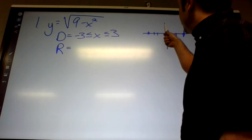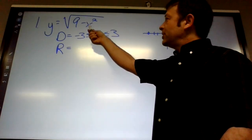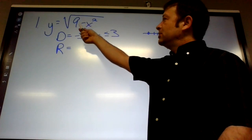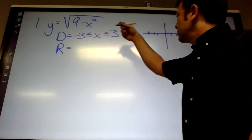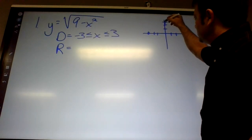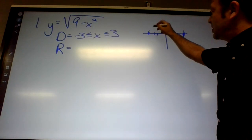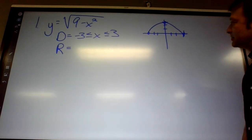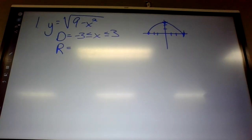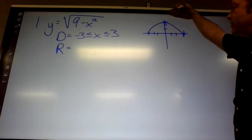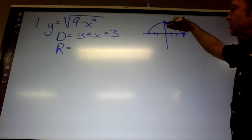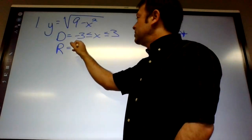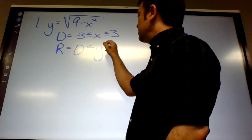If I plug in 0, 9 minus 0 is 9, and the square root of 9 is 3. So what it is, is kind of a semicircle basically. The range — what y values are included — is 0 to 3. So the range is 0 to 3.